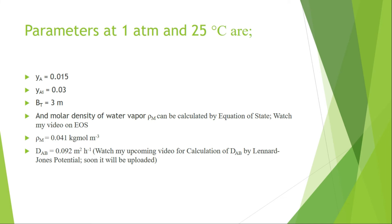Parameters at one atmospheric pressure and 25 degrees Celsius are: y_A, concentration of water vapor in air, equals 0.015; y_Ai, concentration at the interface, equals 0.03 (saturated vapor concentration); BT equals 3 meters, which is the stagnant layer of air through which mass transfer occurs.